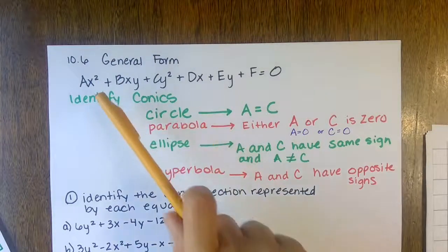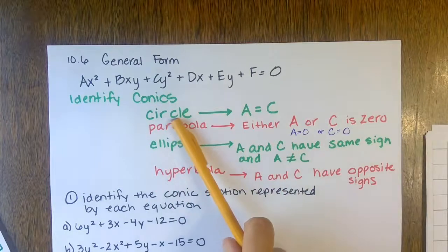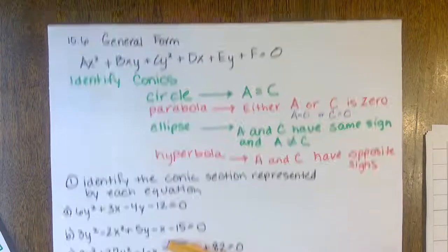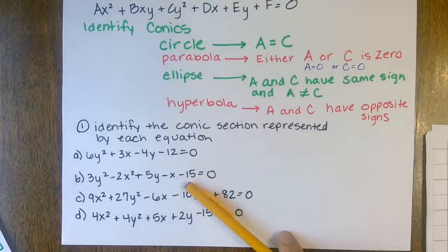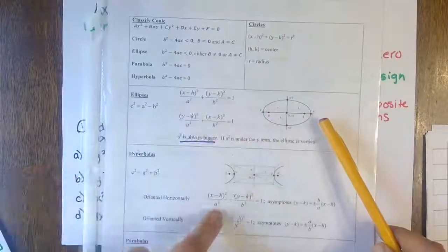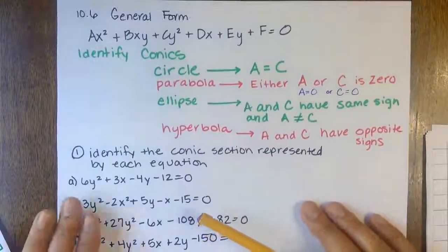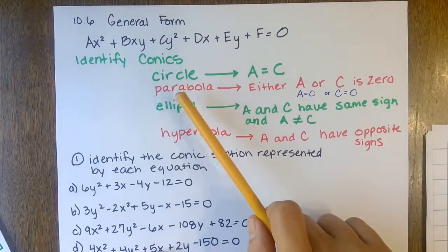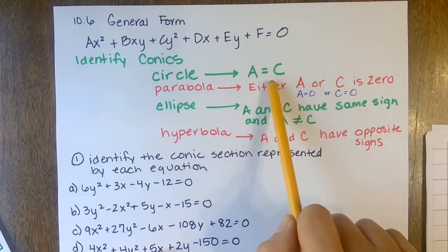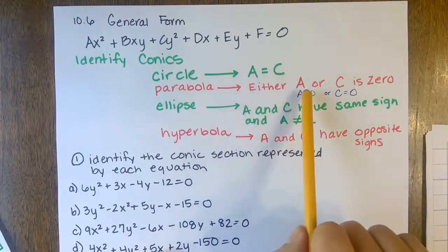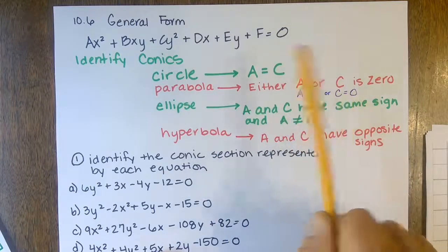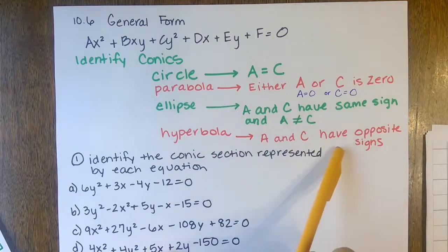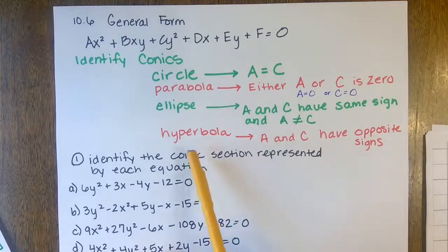If you have something in general form, you can actually tell what type of conic section it is. If your A and C values are equal, it's a circle. If either A or C is zero, it's a parabola. If A and C have the same sign, it's an ellipse. If A and C have opposite signs, it's a hyperbola.